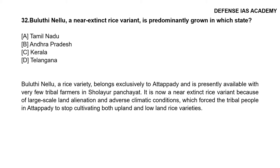Question 32: Bulutti Nellu, a near-extinct rice variant, is predominantly grown in which state? The correct option is option C, Kerala. Bulutti Nellu belongs exclusively to Attapadi and is presently available in very few tribal farmers in Sholayar Panchayat. It is now near-extinct because of large-scale land alienation and adverse climatic conditions which forced tribal people in Attapadi to stop cultivating upland and lowland rice varieties.